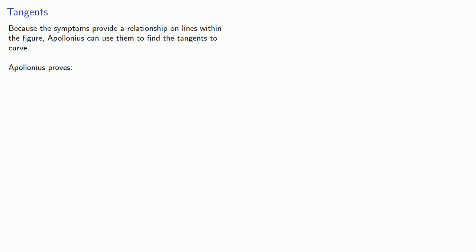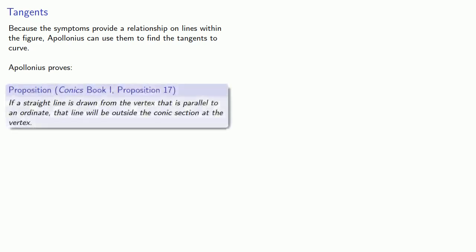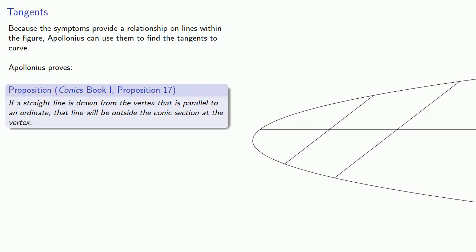Apollonius proves, Conics Book 1, Proposition 17, if a straight line is drawn from the vertex that is parallel to an ordinate, that line will be outside the conic section at the vertex. This is equivalent to giving the tangent to the curve.